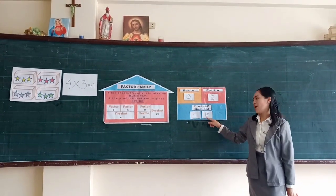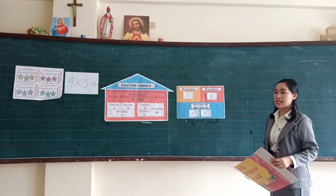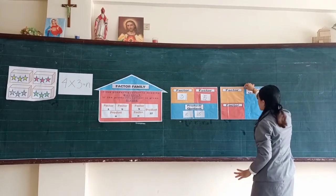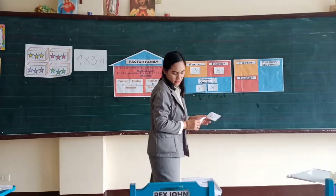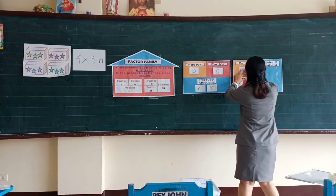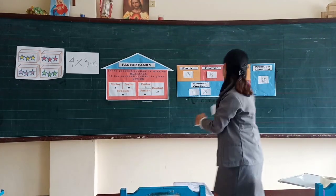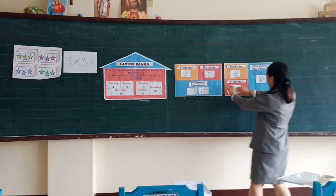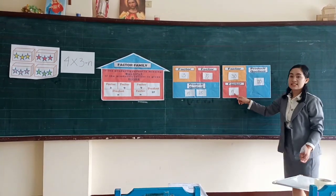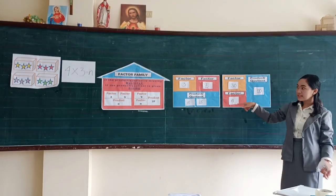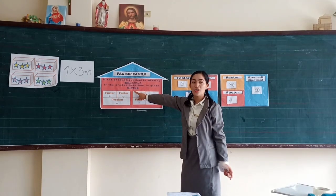Na-subtan? Now, what if the product or quotient is given? So, pangitaan ang factor. If the product or the quotient is given, we need to divide. So, i-divide ang two given numbers or two known numbers.